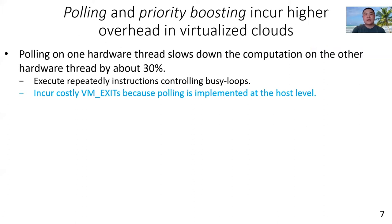The high slowdown is caused by two factors. One is VM-exits, which are incurred because polling is implemented at the host level. The other is repeated instructions controlling the busy loops.